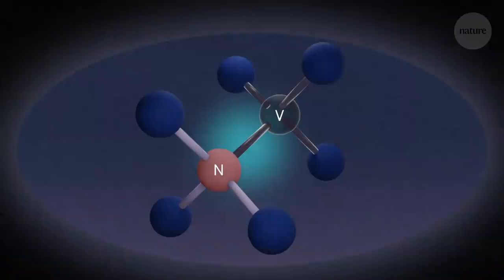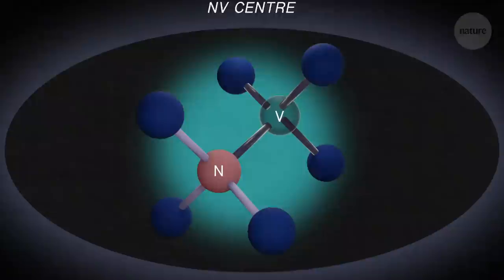That's when a carbon atom is replaced with a nitrogen and a neighboring carbon atom is missing. Together, the nitrogen and the vacancy act like a single entity, an NV center.